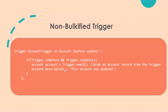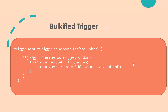Here is the non-bulkified trigger. I have a trigger on Account checking the before-update event. Trigger.new always returns a list of SObject records. What I'm doing here is taking the first account record by providing the index, and updating its description. Considering our scenario of 200 records in a batch, only the first account's description gets updated — the rest 199 are not processed.